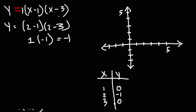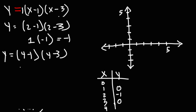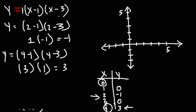We can get some additional points to plot the graph. I'm going to get one point to the right and one to the left. Let's plug in 4: 4 minus 1 is 3, 4 minus 3 is 1, and 3 times 1 is 3. Because 0 and 4 are equidistant from the vertex, they will have the same y value. So when x is 0, y is going to be 3. I like to put the vertex in the middle because the y values will be the same around it, based on the symmetry of the graph.